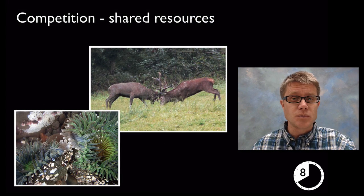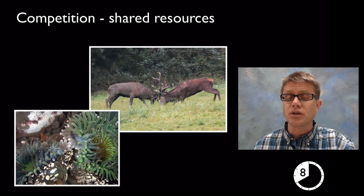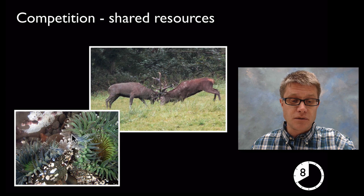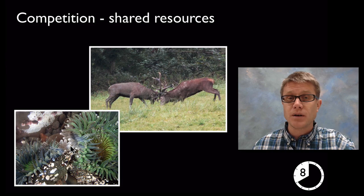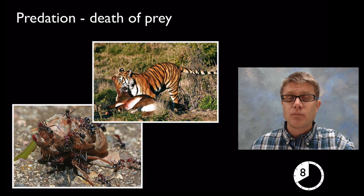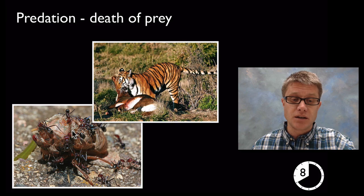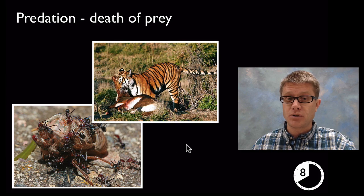It's important to know the different levels of organization within ecology and how populations interact. Competition is when individuals share resources — for example, red deer competing to mate with females, or anemones fighting for control of the ocean floor. Predation is when a predator eats prey — for example, a tiger feeding, or ants feeding on a katydid.